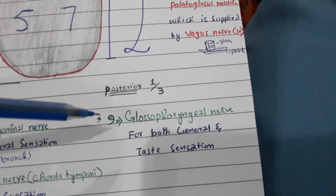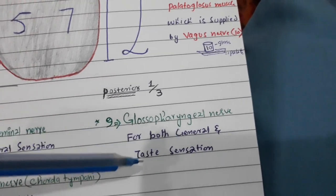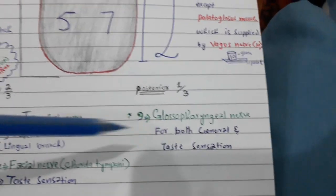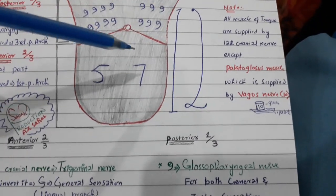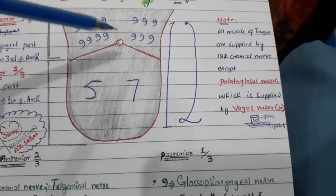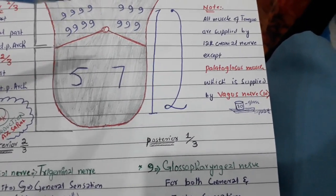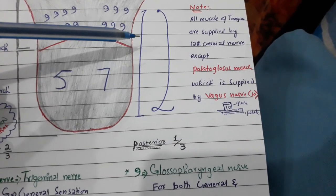The glossopharyngeal nerve supplies the posterior one-third and is responsible for both general sensation and taste sensation. So to summarize: the general and taste sensation of the anterior two-thirds and posterior one-third are all sensory functions.